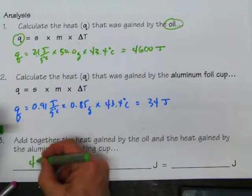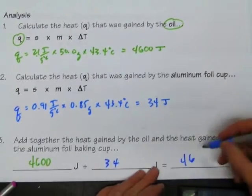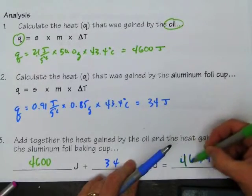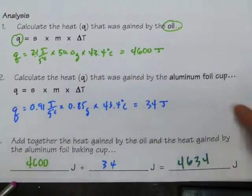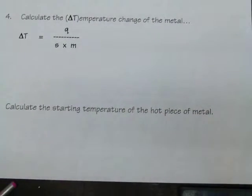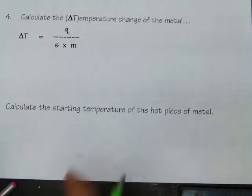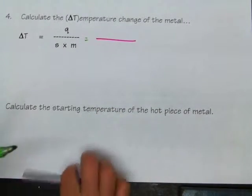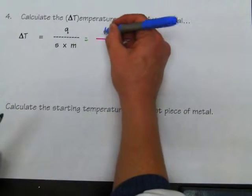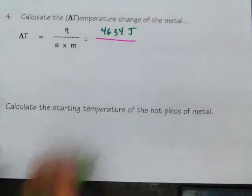The specific heat capacity of oil is much higher, and there's more mass, which is why we get such a large heat value for the oil. Adding the two together: 4,600 joules from the oil plus 34 joules from the foil cup gives a total of 4,634 joules. That's how much energy was transferred from the hot metal to the cold calorimeter.